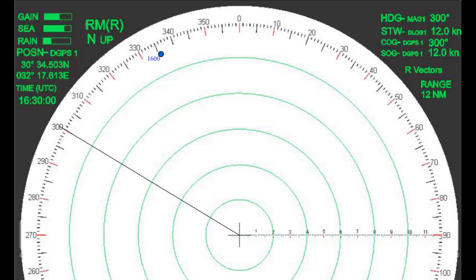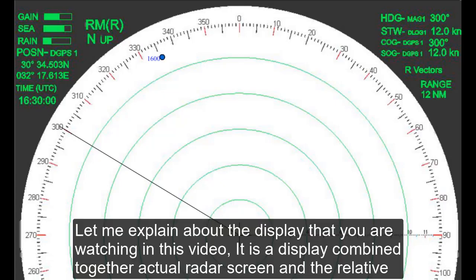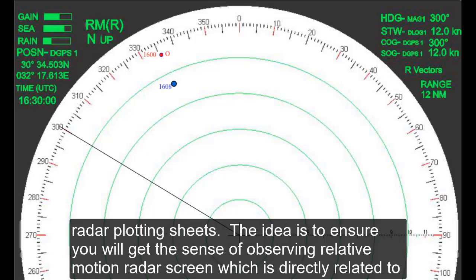Let me explain the display you're watching in this video. It's a display combined together, actual radar screen and the relative radar plotting sheets. The idea is to ensure you get the sense of observing relative motion radar screen which is directly related to relative radar plotting.